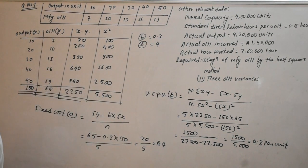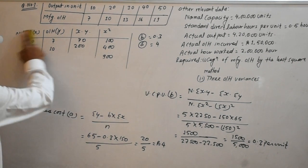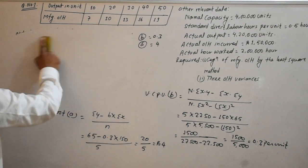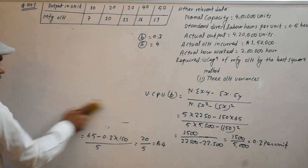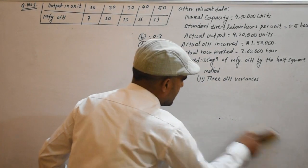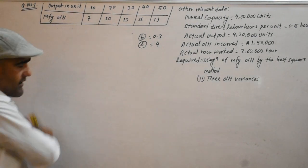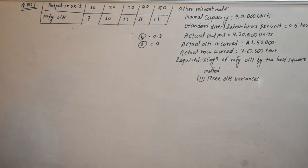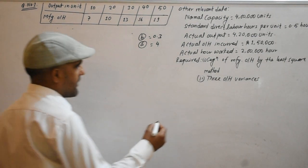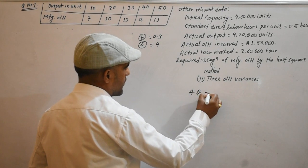Now, part B covers the three overhead variances. We have the spending variance, the efficiency variance, and the capacity variance.